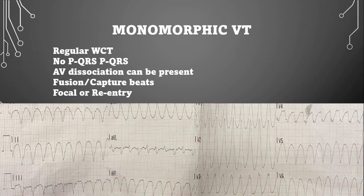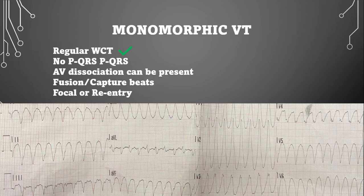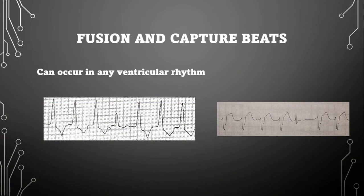Monomorphic VTAC involves focal or reentrant rhythms in the ventricles — the impulse circles around scar tissue. On this ECG, the rhythm is regular and over 130 bpm, confirming a regular wide complex tachycardia. There are no PQRS-PQRS patterns and no clear P-waves or fusion and capture beats visible, but this is your typical monomorphic VTAC. Fusion and capture beats are indicative of ventricular rhythms and can occur in both idioventricular rhythms and VTAC.